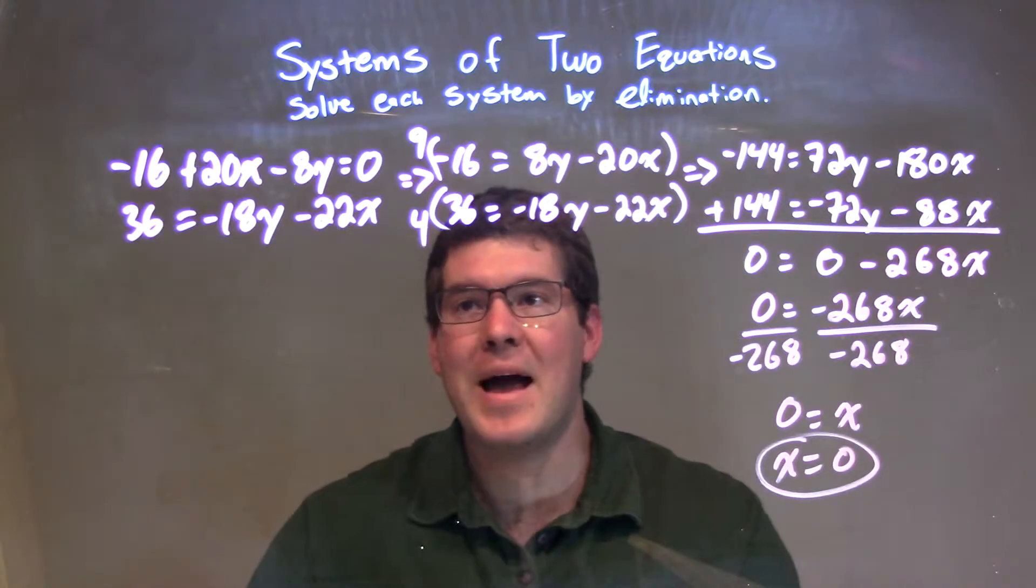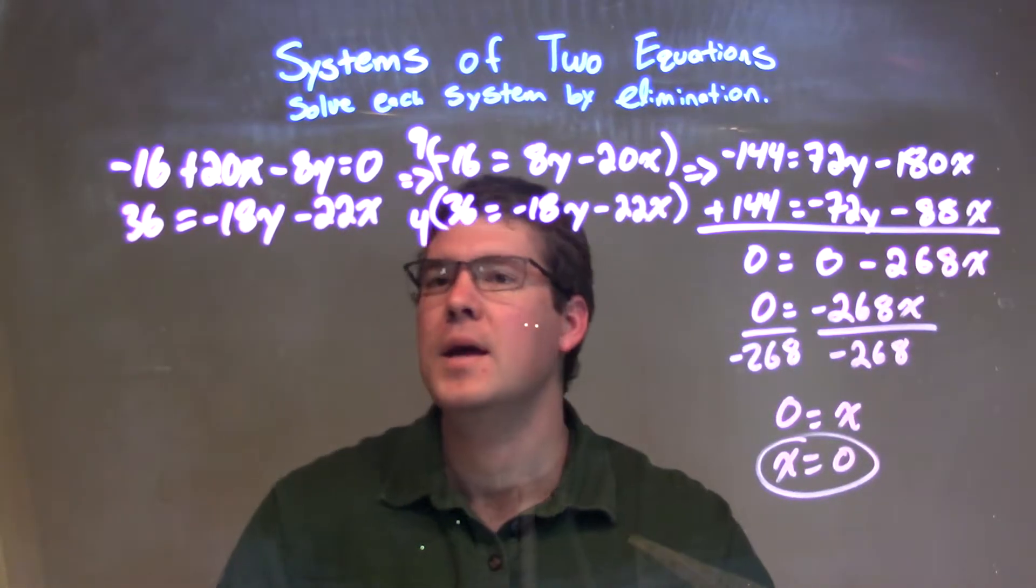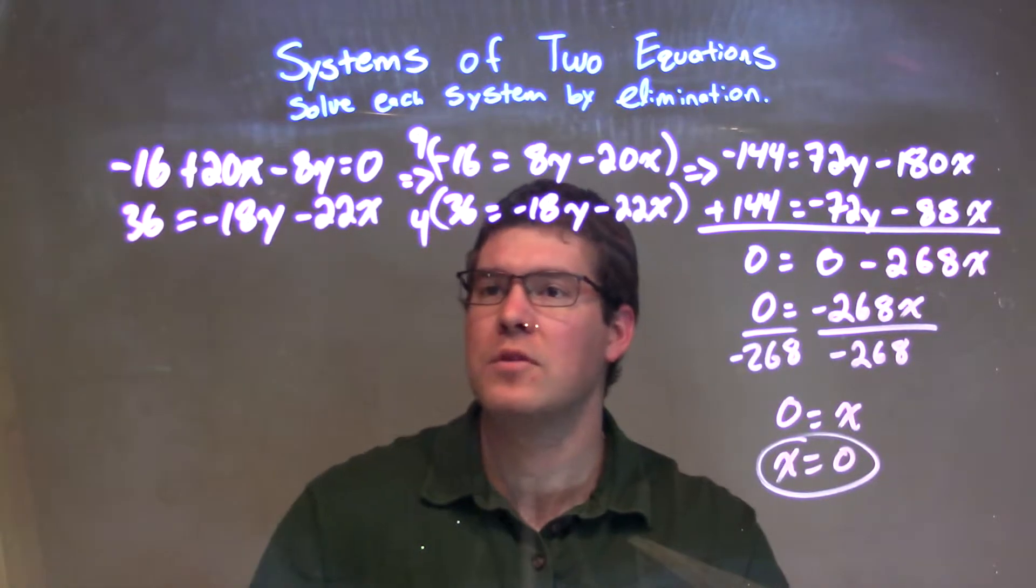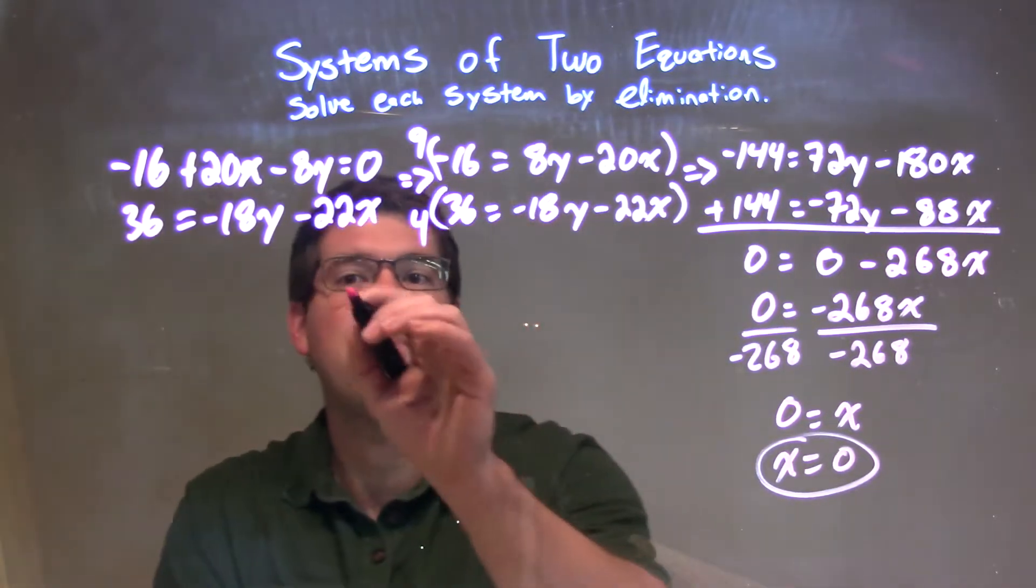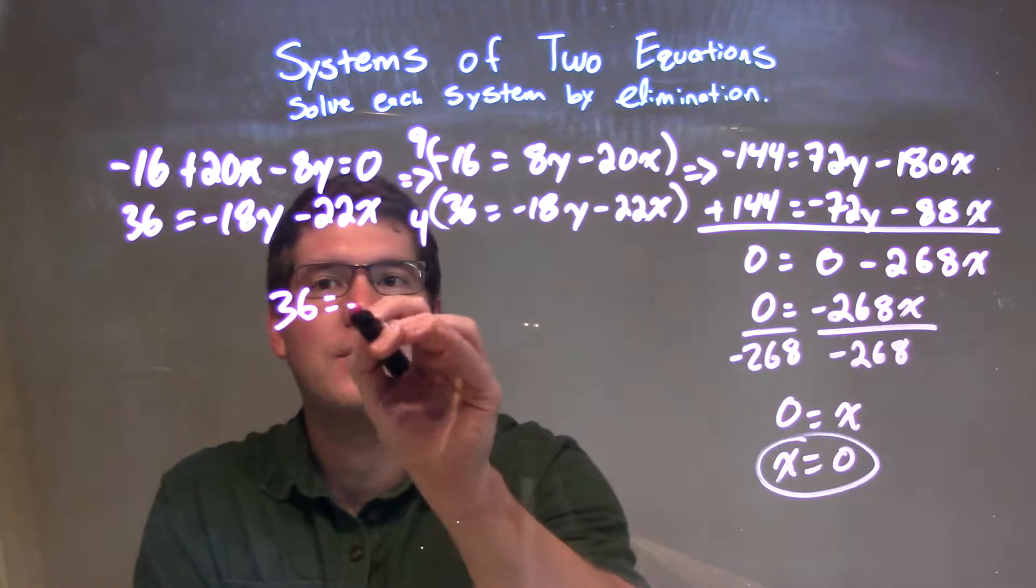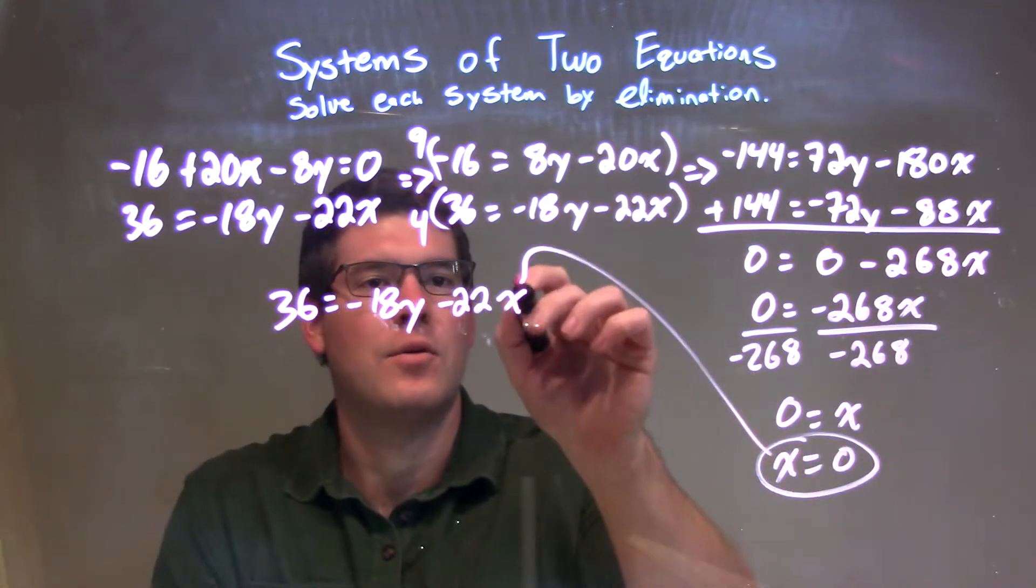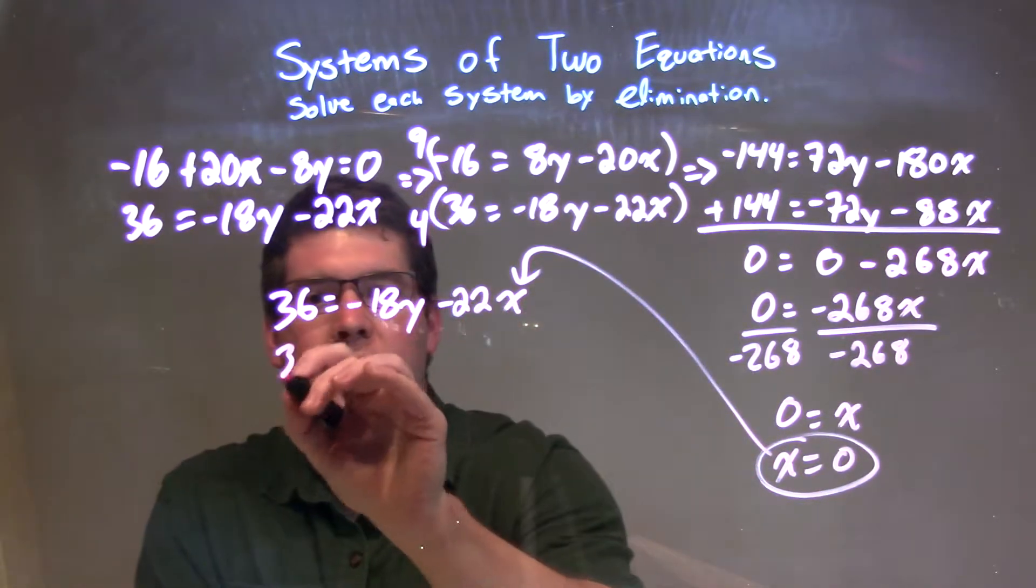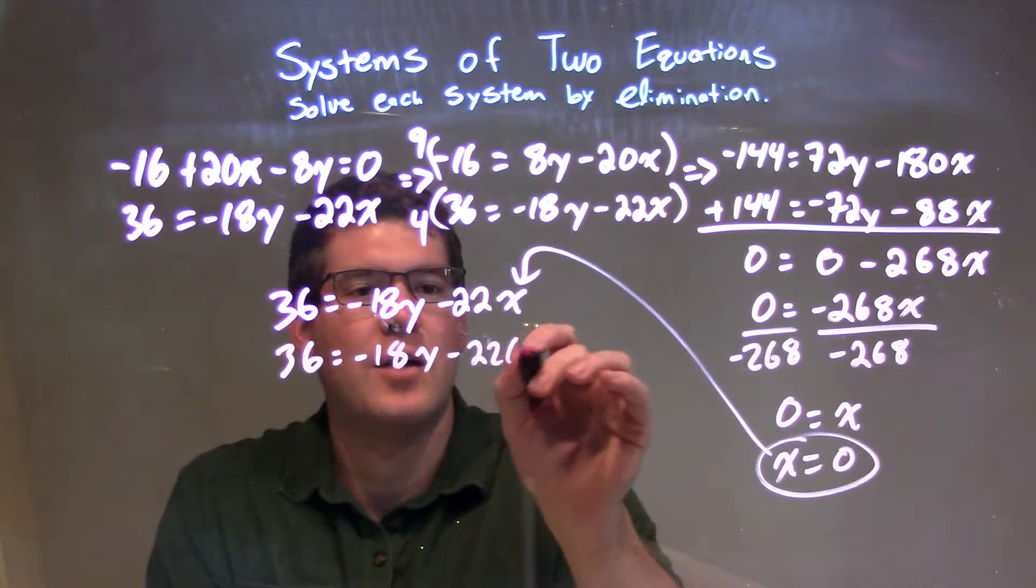So, now we want to plug that back into another equation to solve for our y. It really doesn't matter which equation we choose. Let's go with the second one. We have 36 equals negative 18y minus 22x. I'm going to plug 0 in for x there.